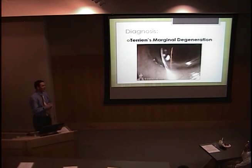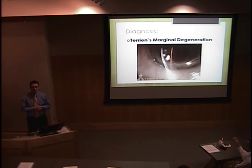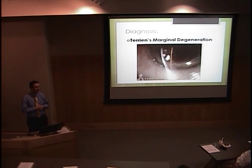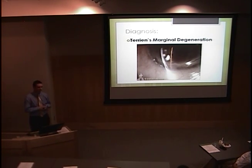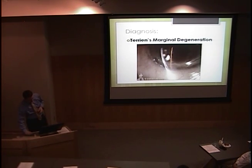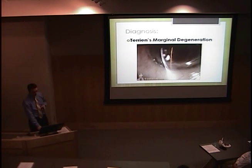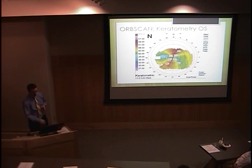So the diagnosis, which we've already talked about, is Terrien's marginal degeneration. This is a disease that has been around since it was first diagnosed by Terrien back in the year 1900. This is a better example of what you see on slit lamp with the thinning — there's a bit of a step-off here that is even more pronounced in some other pictures.